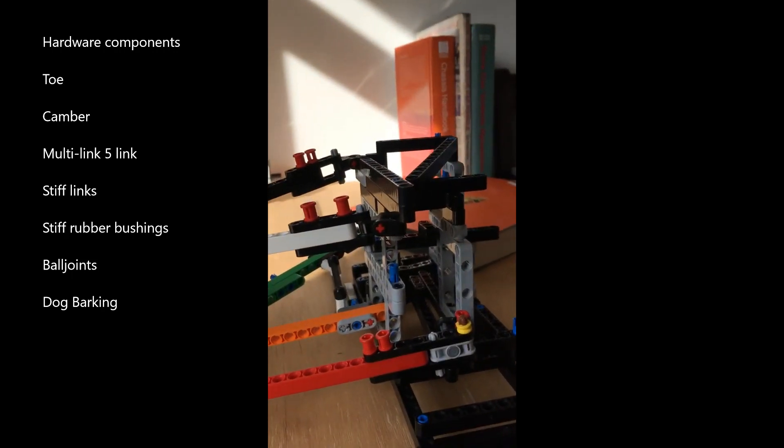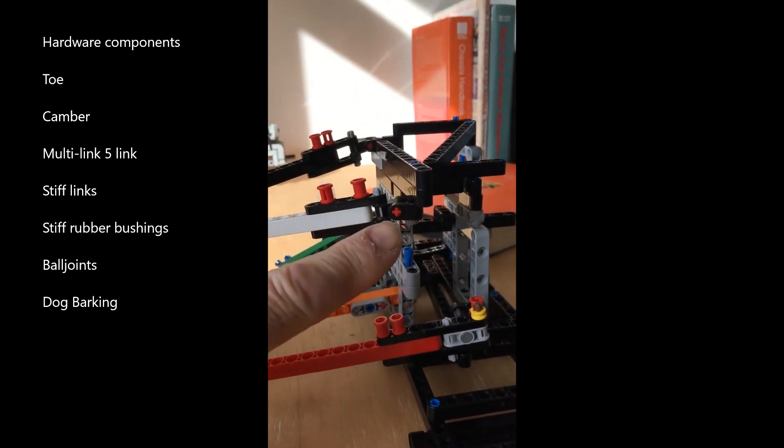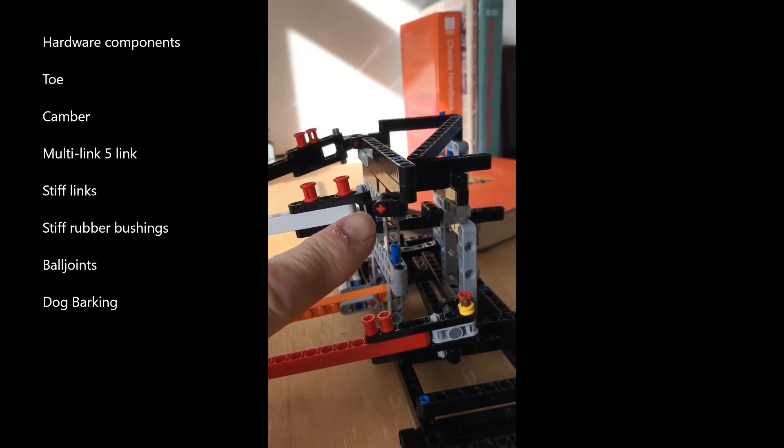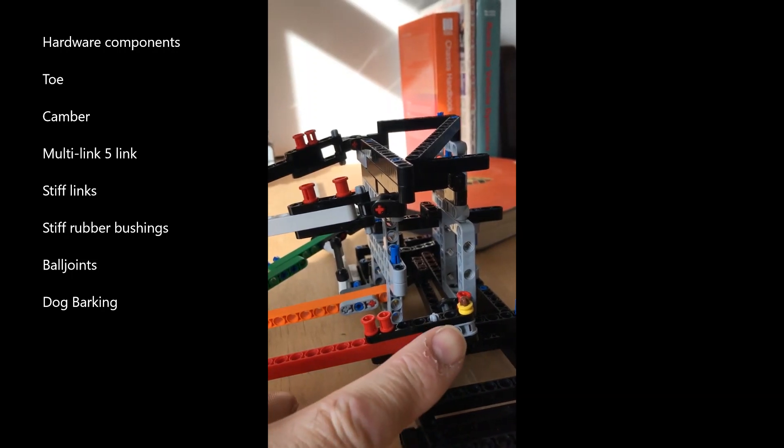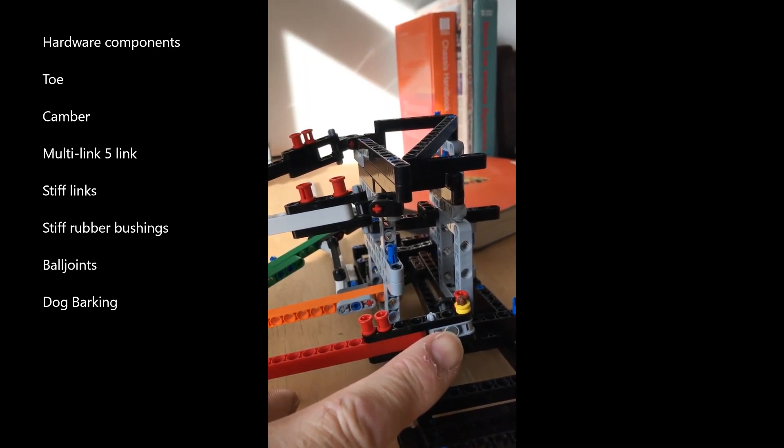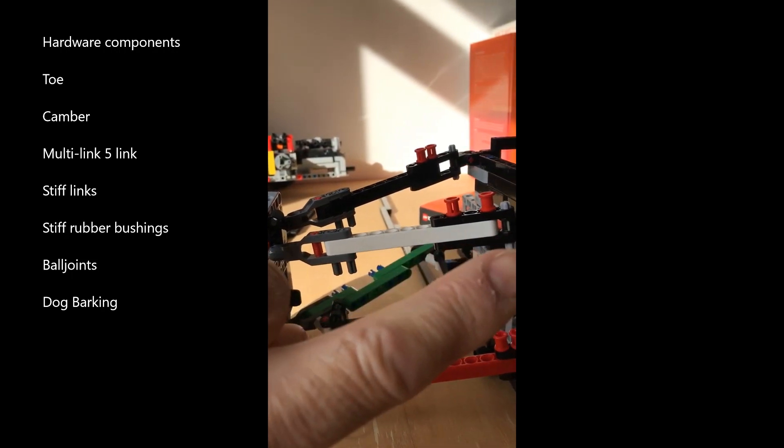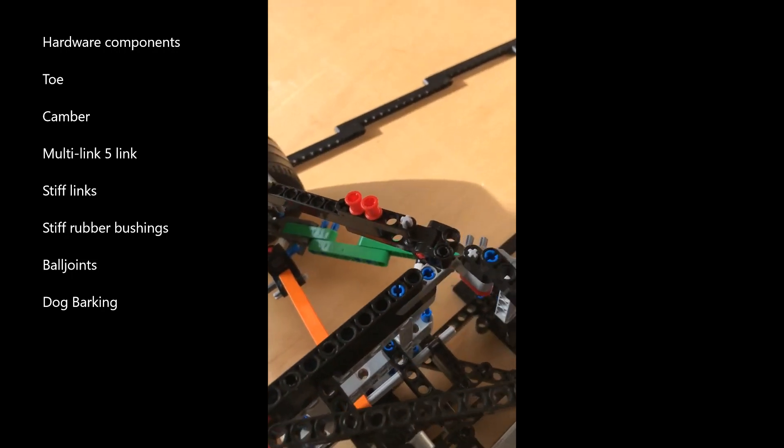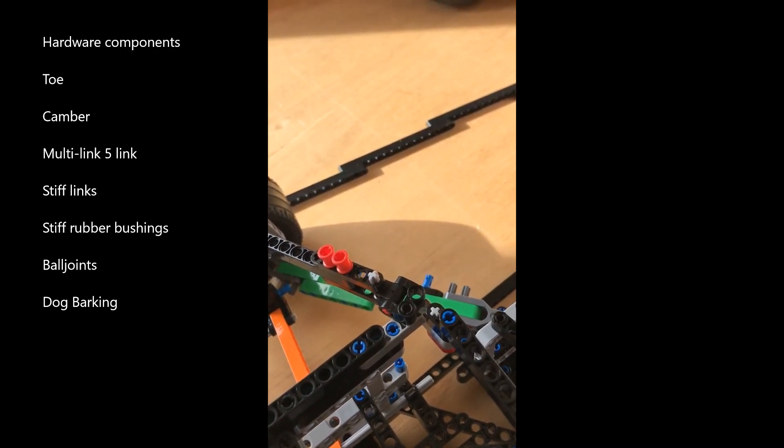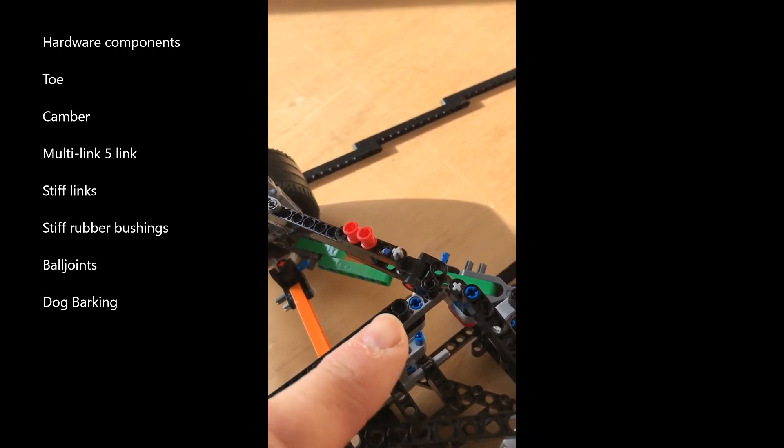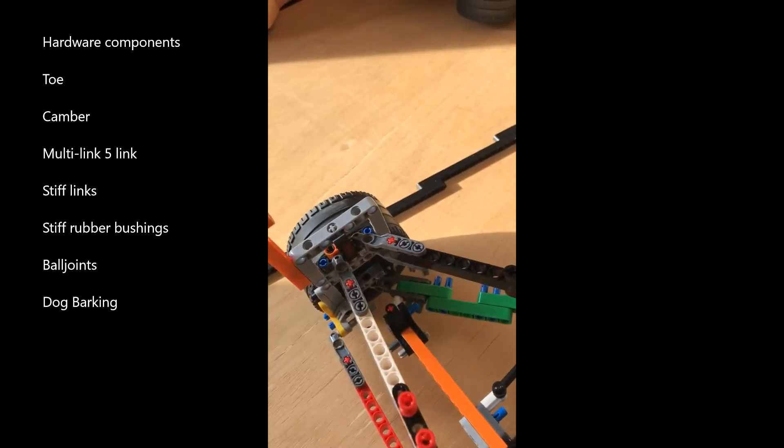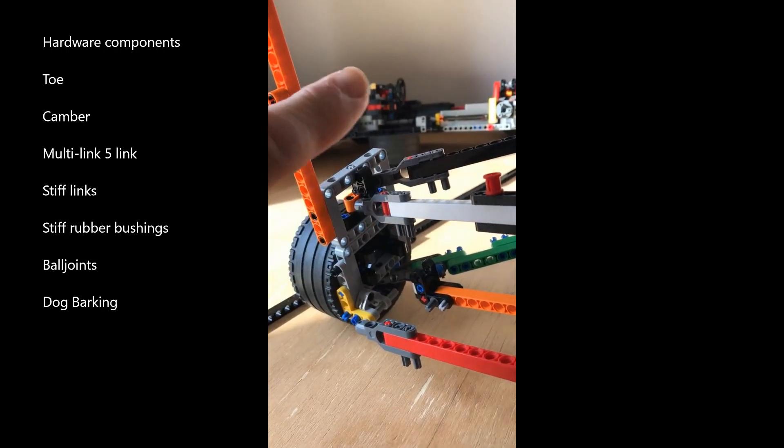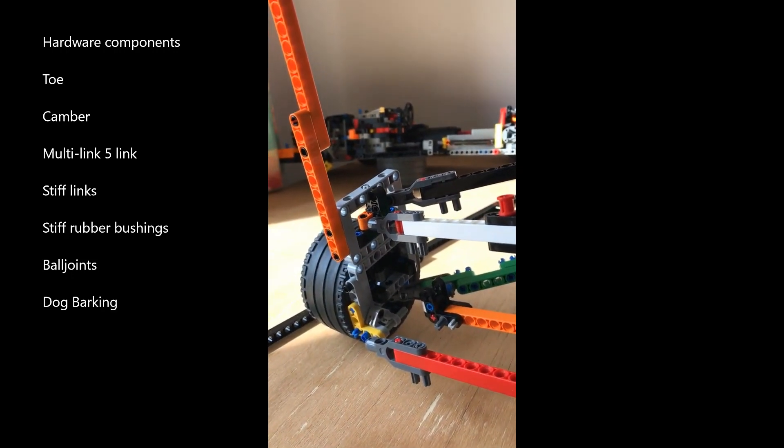At the inboard of these links there are bushes. These allow a constrained amount of movement and are very stiff on the car. So we have bushes on the inner pivot location of this link and the upper link here and here.